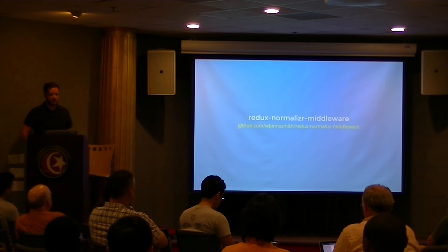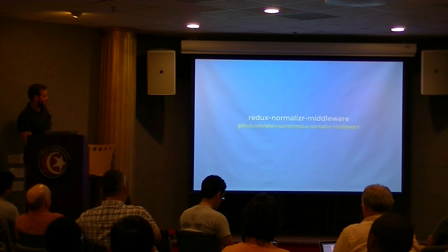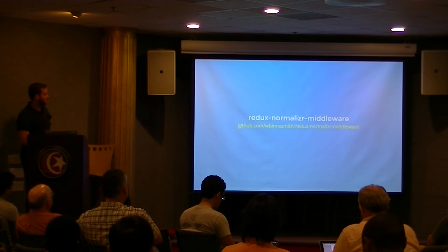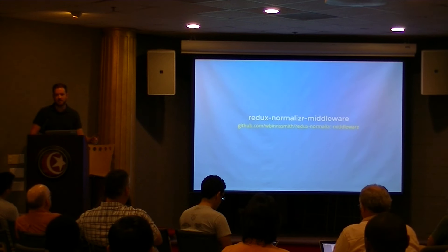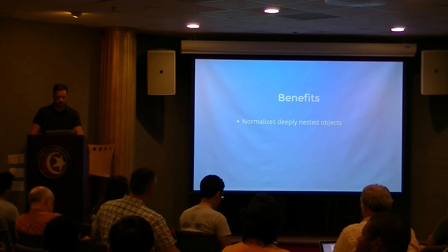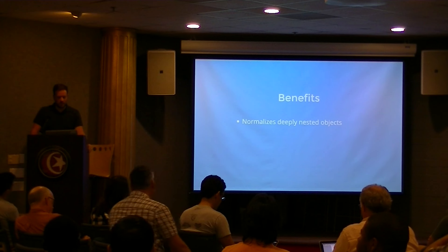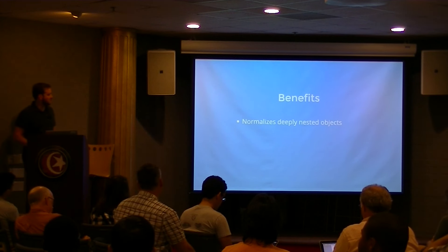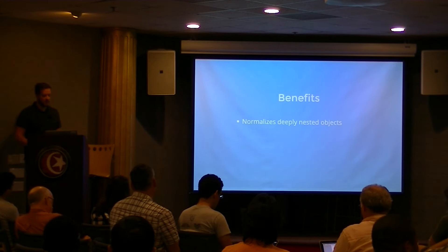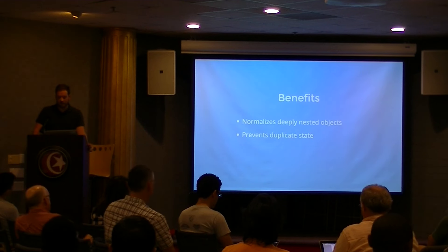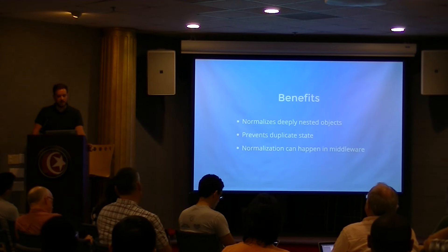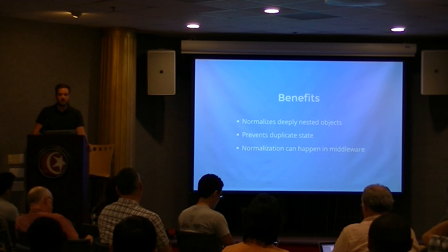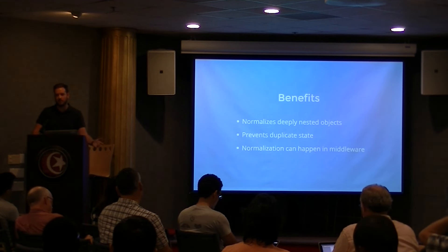This is made easier by using Redux Normalizer Middleware — you don't have to create your own. The benefits of using Normalizer: it normalizes your deeply nested objects, prevents duplicate state, and normalization can happen in your middleware so you get it for free once the middleware is set up.